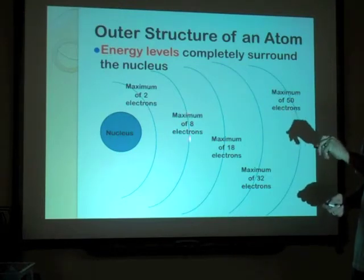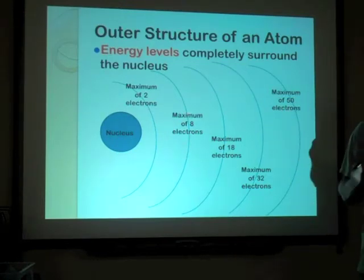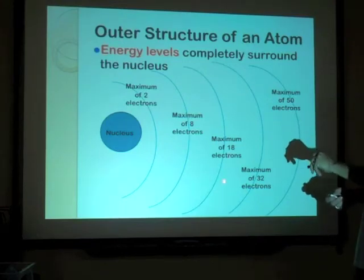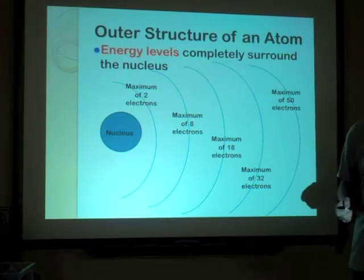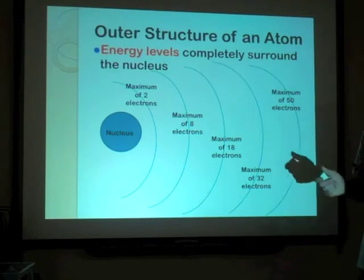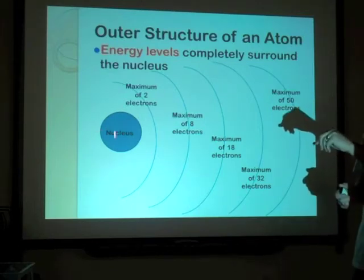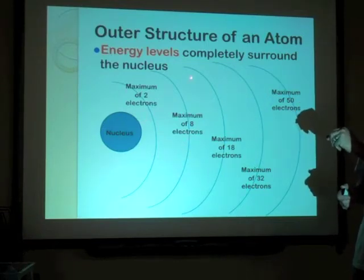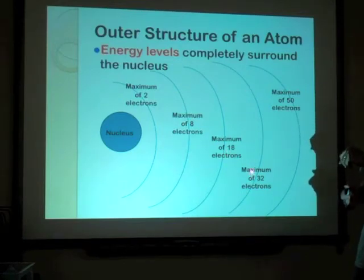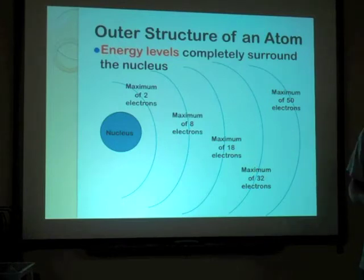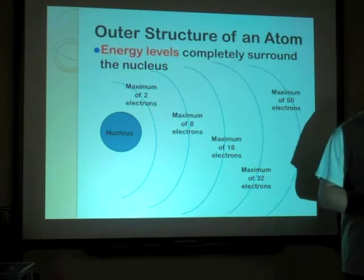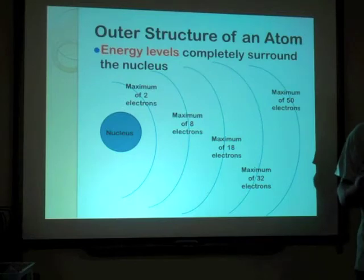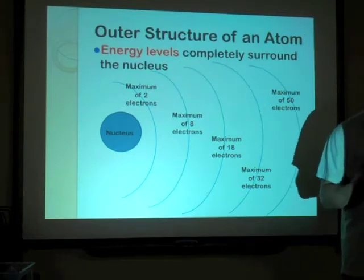The next ring can have eight. Two and eight is a big rule in my classroom, because we're really not going to deal with the other energy levels too much in middle school. Go ahead and write this diagram in your journal with the nucleus — put a maximum of two electrons for the first ring, the second ring can hold up to eight, the third ring can hold up to 18, the next can hold 32, and the maximum of the outer ring is 50.